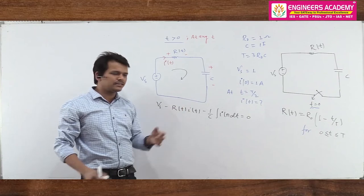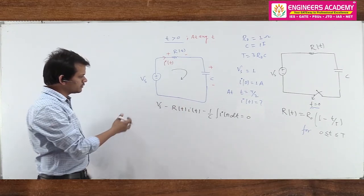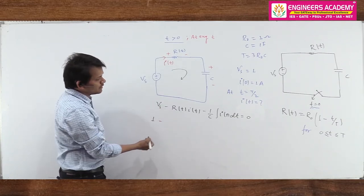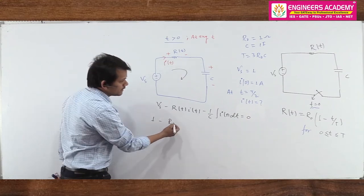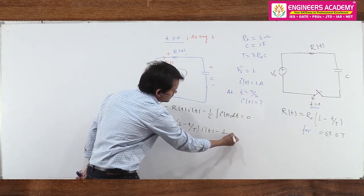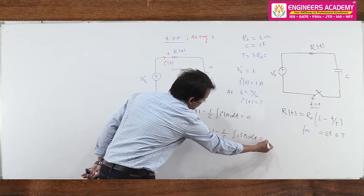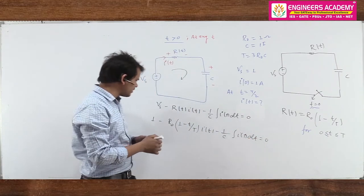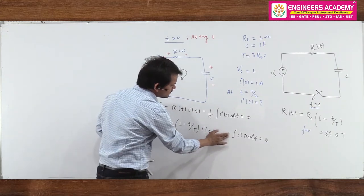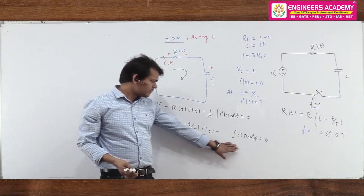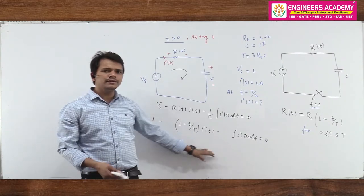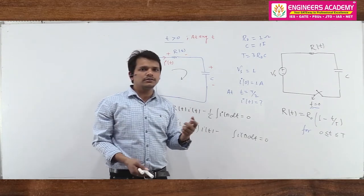First, we substitute the values: Vs = 1, R(t) = R0·(1 - t/T), R0 = 1 ohm, C = 1 farad. So the equation becomes: 1 - (1 - t/T)·i(t) - ∫i(t)dt = 0. Since R0 = 1 and C = 1, we can remove those constants. To eliminate the integral, we differentiate both sides of this equation. This converts it into a differential equation that we can solve to get i(t).